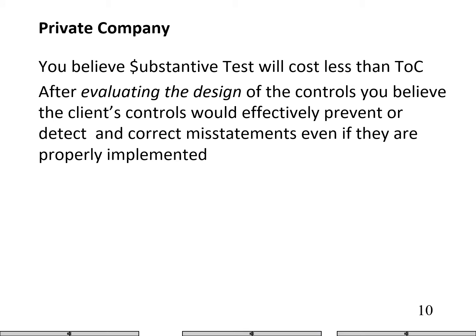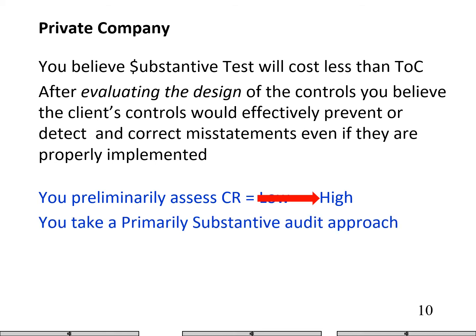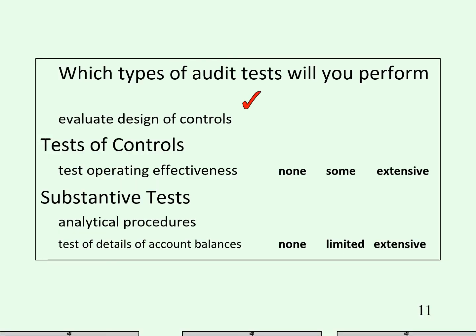Next scenario: you believe substantive tests will cost less. Again, I know I'm going to take a primarily substantive approach because it's a private company. I believe their controls are effective, so I'll preliminarily assess control risk is low. But then I need to document why I'm assessing control risk as high — because I'm not going to test it. We have to document that our preliminary assessment of control risk is low, but because we think it's more efficient to perform substantive tests, we assess control risk as high since we have no evidence to support a low control risk assessment. Always none for tested controls because it's private. Always extensive substantive tests.